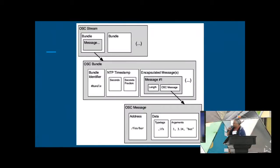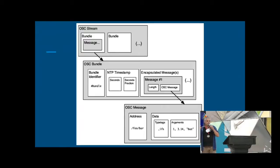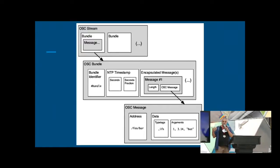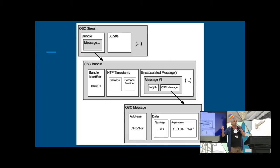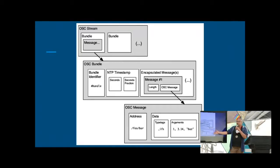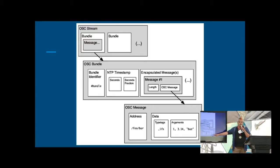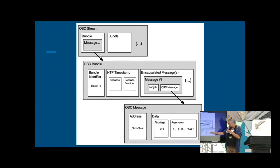This is basically what an OSC stream looks like. At the lower level, you've got the OSC message, which contains an address. Your program can basically just parse it — you can literally just have a switch statement that says, if I get a message where the first part of the address is this, I know to route it to this specific function and deliver the payload. The data is fairly easy to read — it's basically just an array, and you have an array of the types that the data is going to be in.